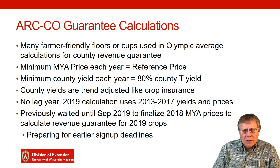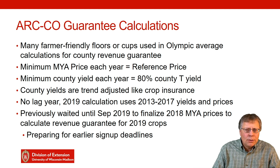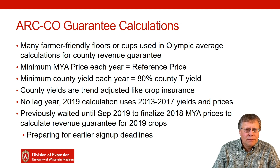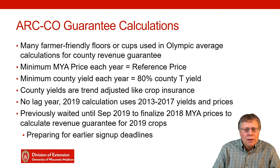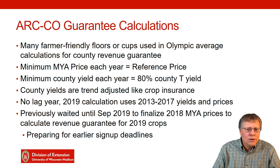First, there's the marketing year average price, but when they calculate the guarantee for each county, they use the maximum of the marketing year average price or the reference price. So for corn, the price used will always be $3.70 or higher.